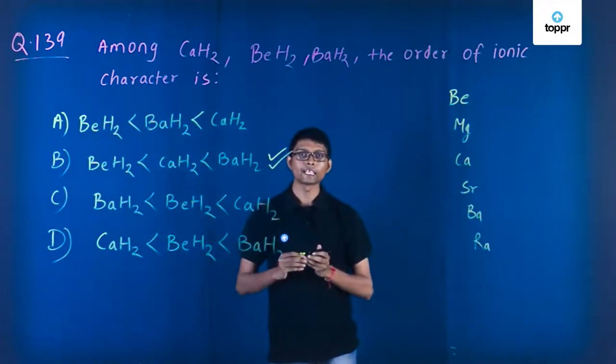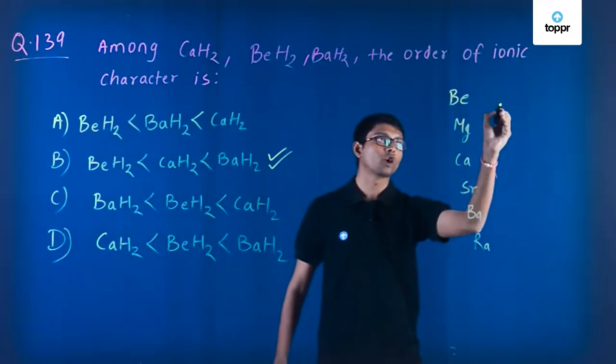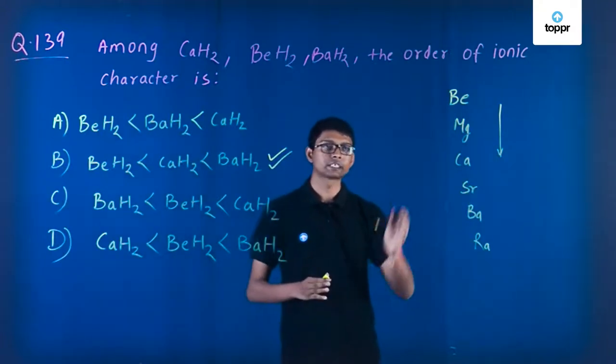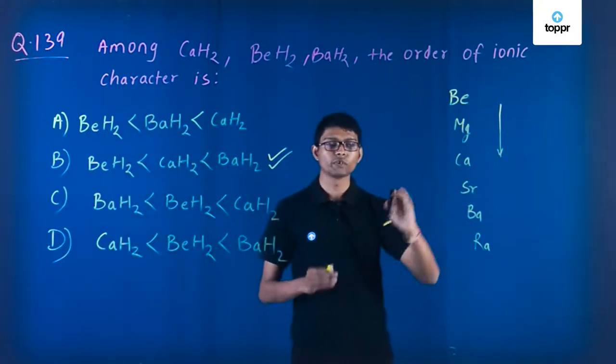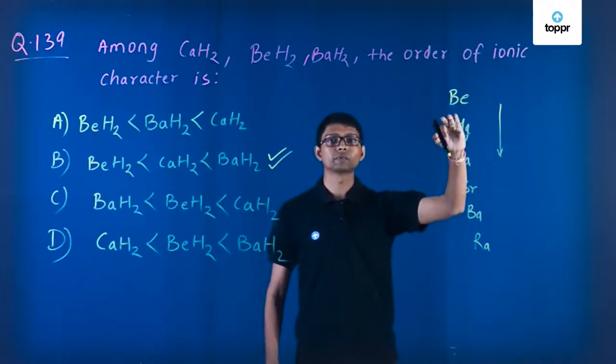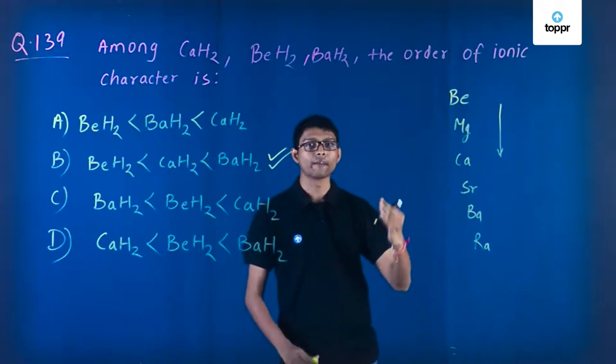As we know, when we go from up to down in any group, the ionic characteristics decrease. So the element at the bottom will have least ionic characteristics, and the element at the top will have more ionic characteristics.